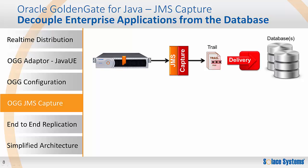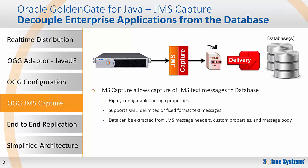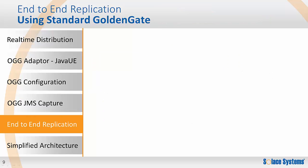How does this work? The JMS Capture reads the message from the JMS queue or topic endpoint and converts these messages into the GoldenGate message format, writing the resulting operation into the GoldenGate trail file. The operations are then replicated to the target database following the normal GoldenGate process. Similar to the Java User Exit for sending messages, the JMS Capture is highly configurable and supports a variety of message formats, which allows a lot of flexibility in how the system is set up.